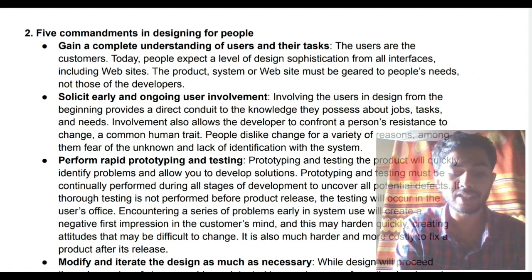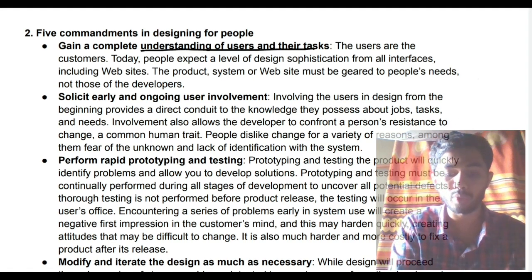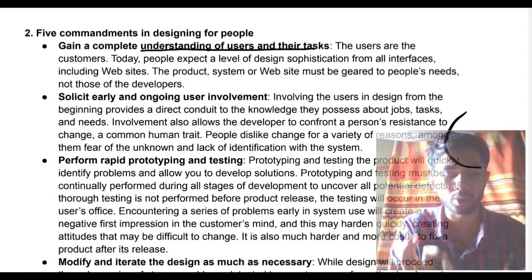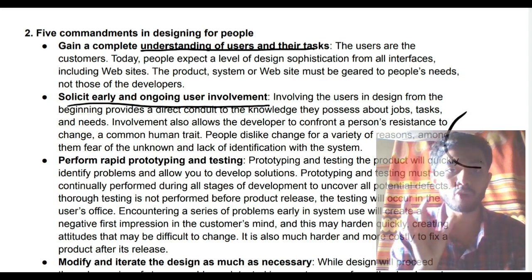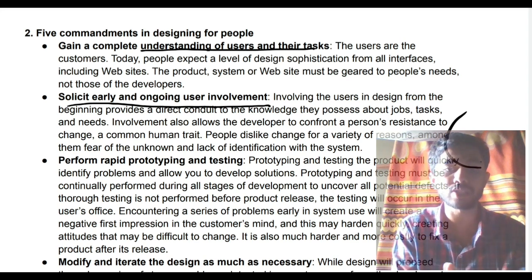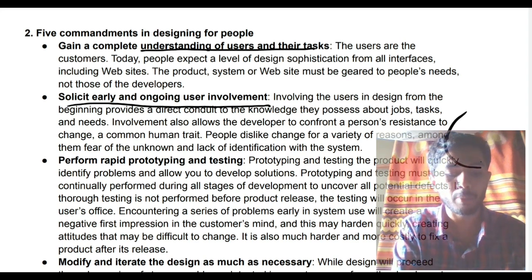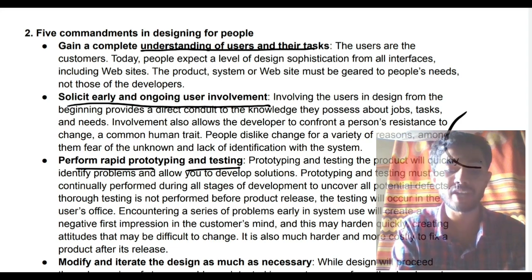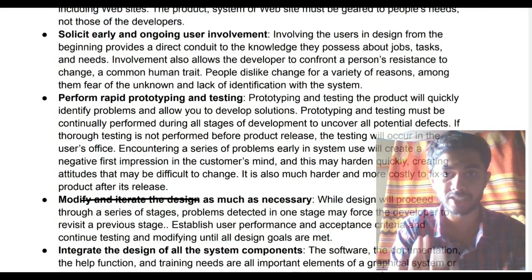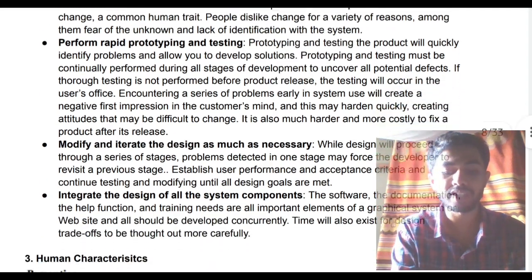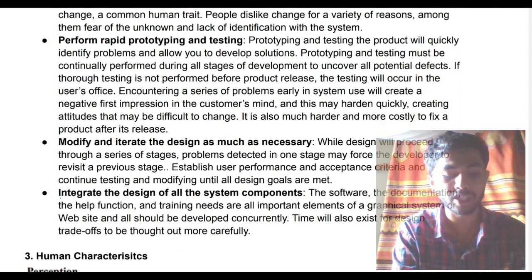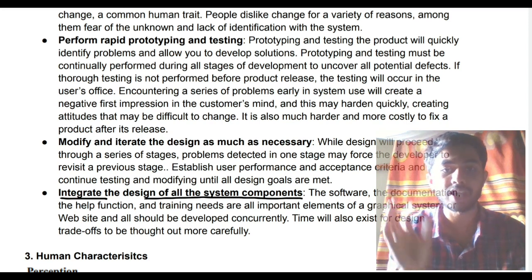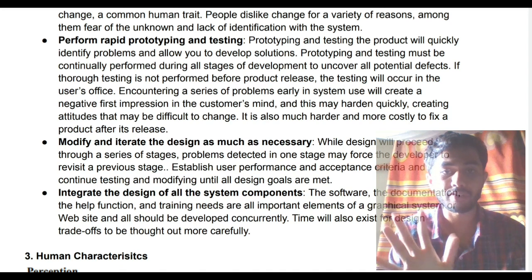The five commandments are: first, gain a complete understanding of the user and their tasks — when you go there, first understand what the user is doing. Second, solicit early and ongoing user involvement, so you can know what's happening next. Third, provide rapid prototyping and testing — test existing features, and if they are not good, modify and iterate the design as much as necessary. Fourth, continue to integrate the design of all system components as the teacher keeps giving further assignments. Fifth, keep iterating until the design is complete.